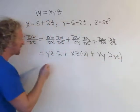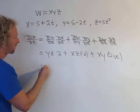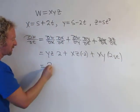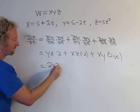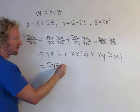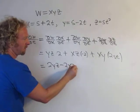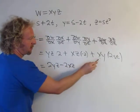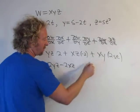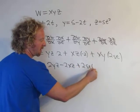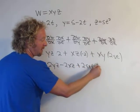Now we clean this up. We get 2yz − 2xz + 2st·xy.